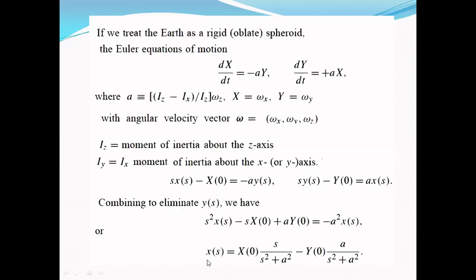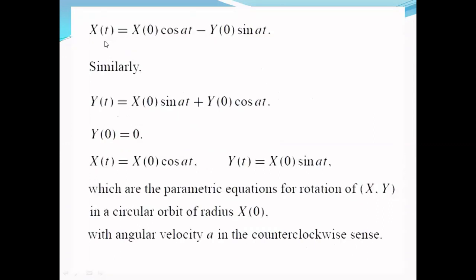When we take the inverse Laplace transform, we get X(t). On the right hand side, X(0) is a constant and inverse Laplace transform of s/(s² + a²), that is cos(at), minus Y(0), that is also a constant, times inverse Laplace transform of a/(s² + a²), that is sin(at). So, finally, we obtain X(t) = X(0)cos(at) - Y(0)sin(at).